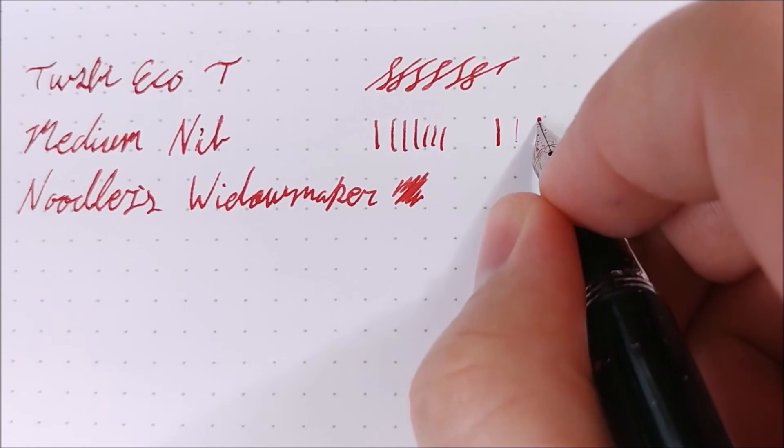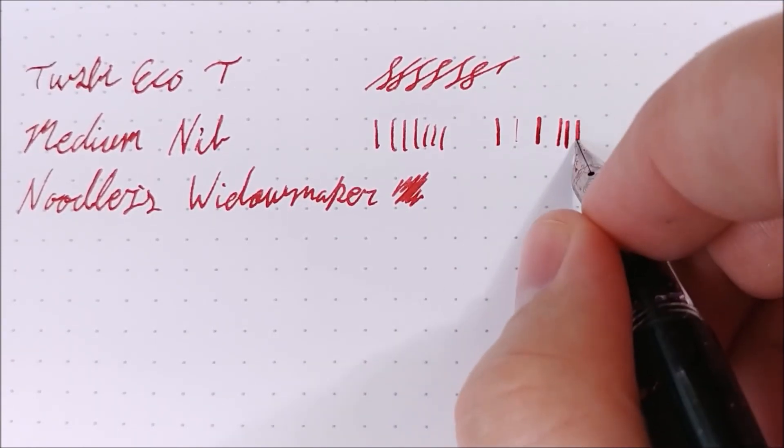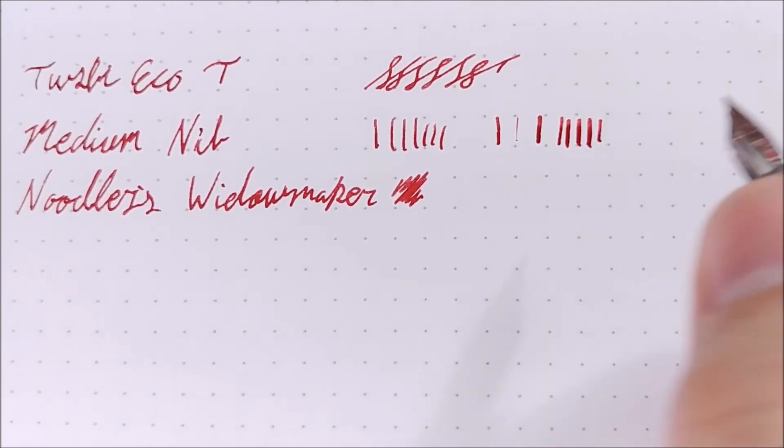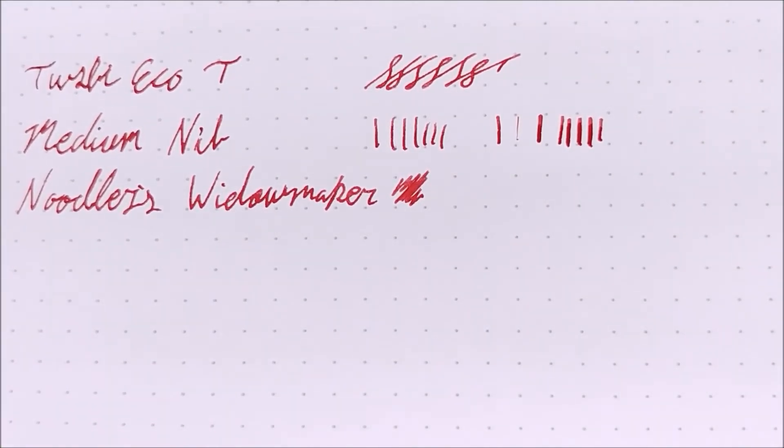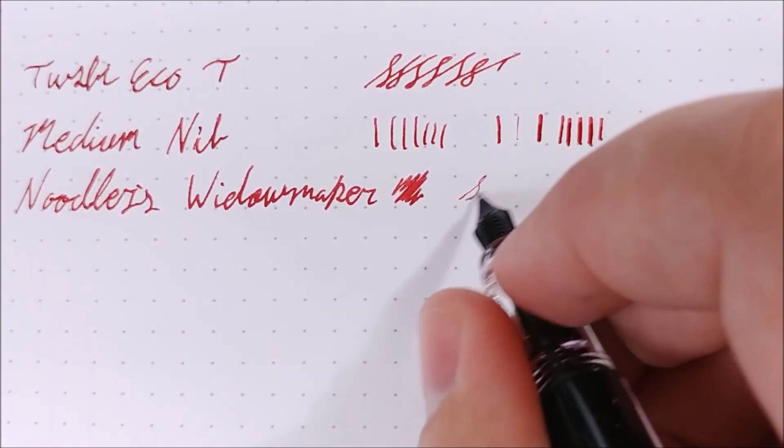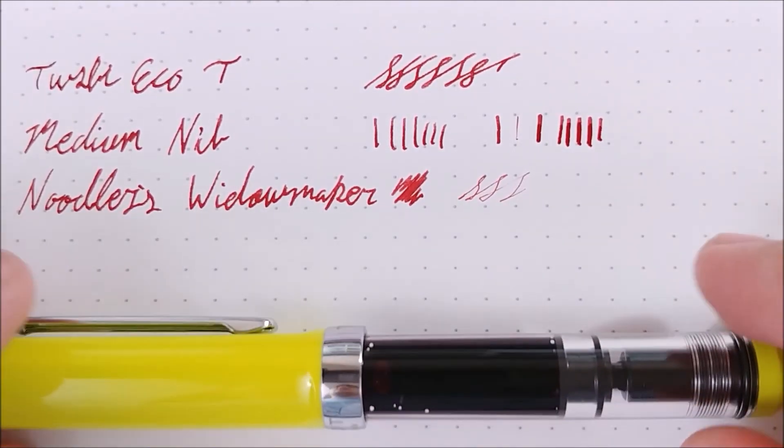And then, with some pressure. So, you can get a little line variation out of this. But it's a steel nib. I probably wouldn't push it. But you can if you really need to. And the reverse writing is very scratchy and very dry. But if you needed to, like, sign your name or something, you might be able to get away with that as well. On to the conclusion.